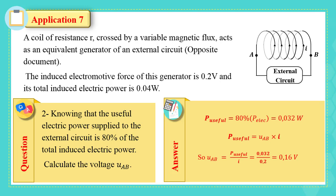P useful equals UAB multiplied by I. So, UAB equals P useful over I equals 0.032 over 0.2 equals 0.16 volt.